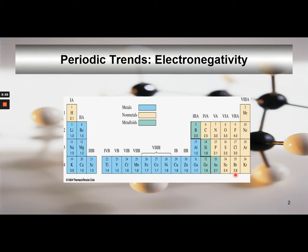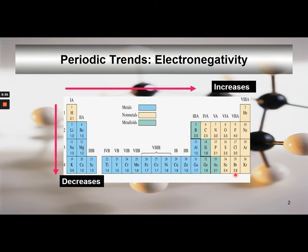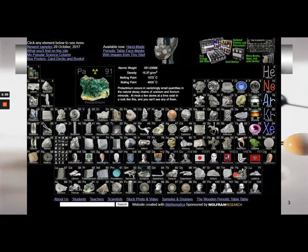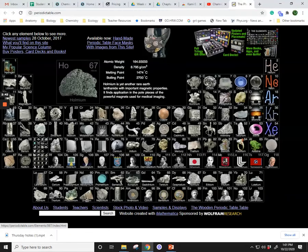So it increases across the period and decreases down the groups. Again, if we look at an interactive graphing of these particular properties for electronegativities...